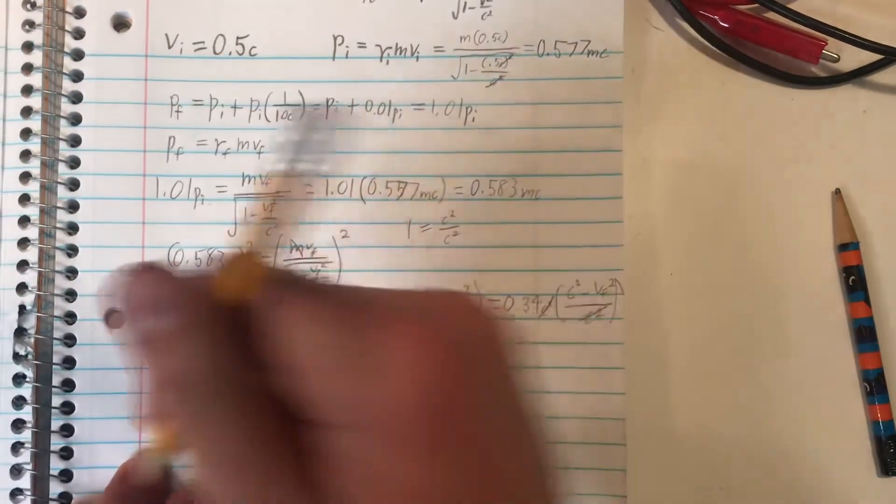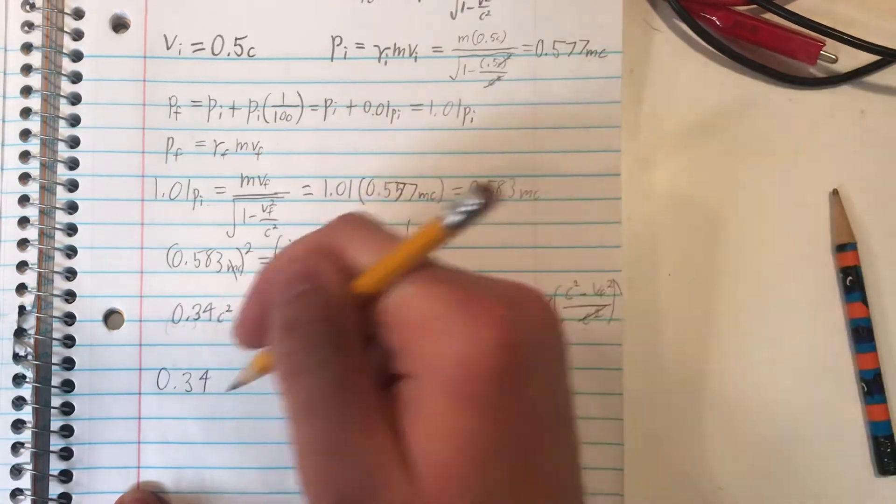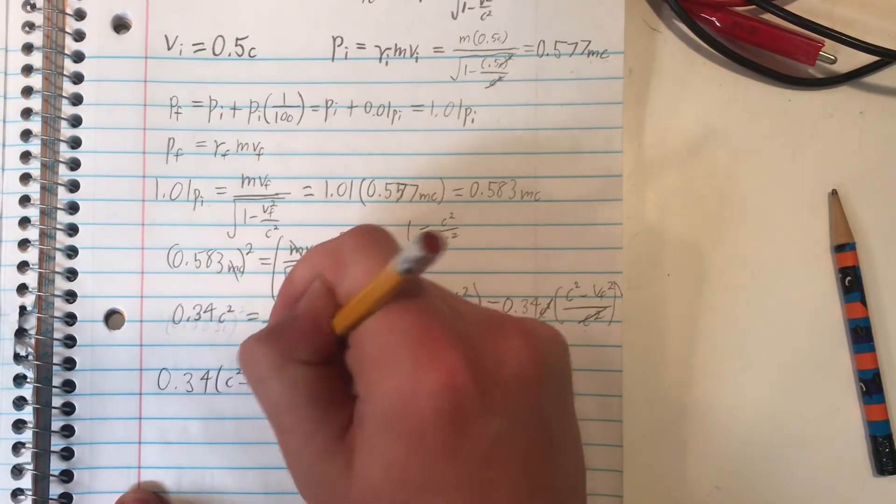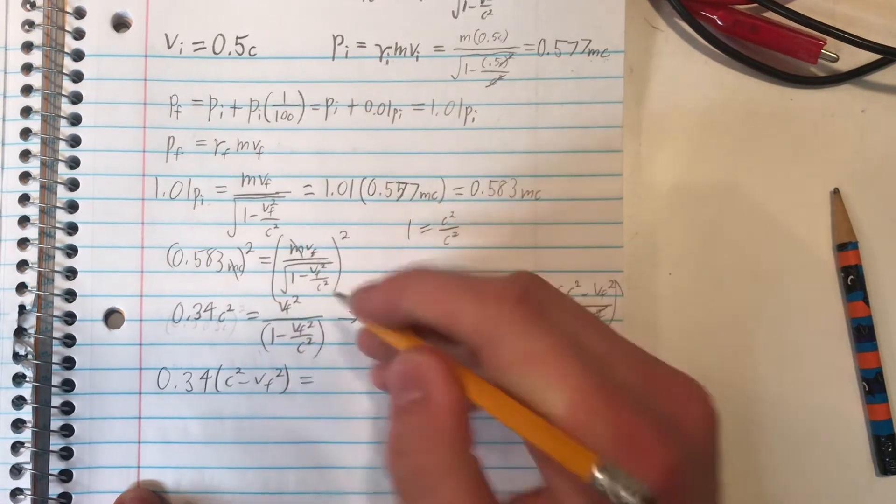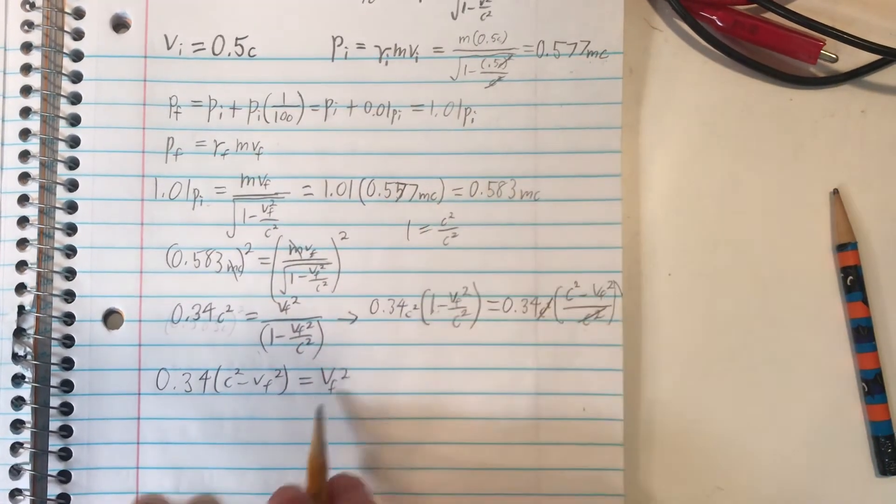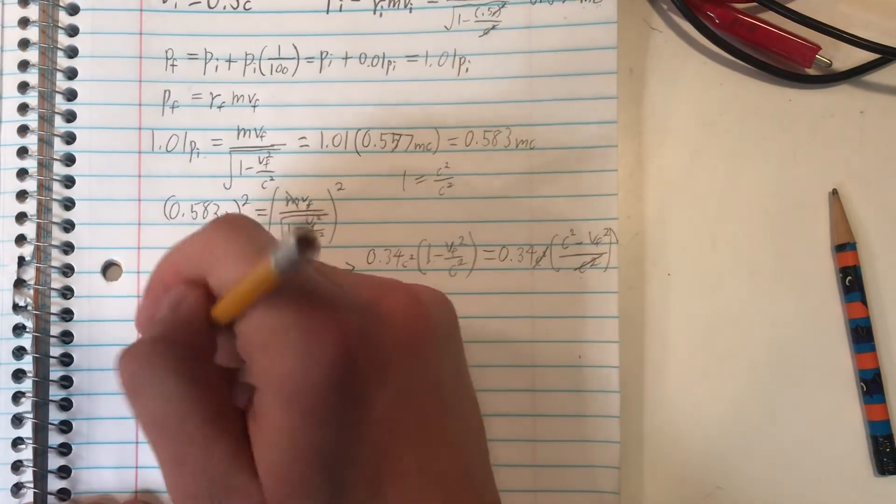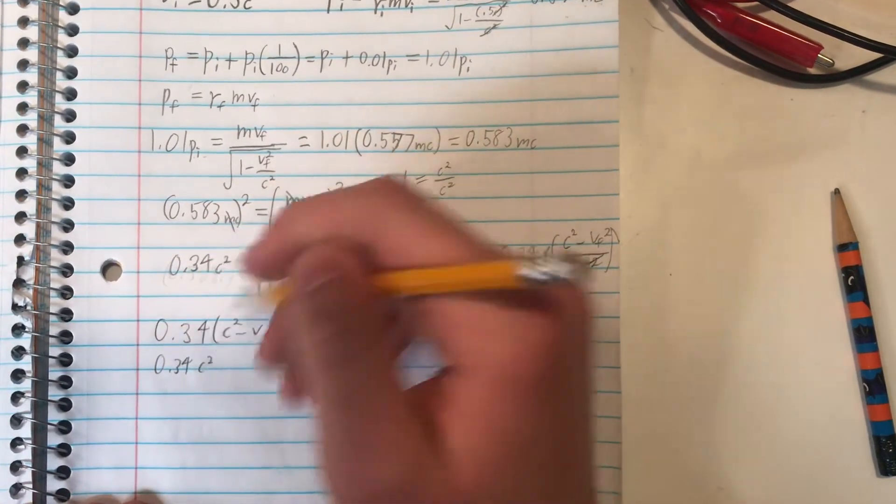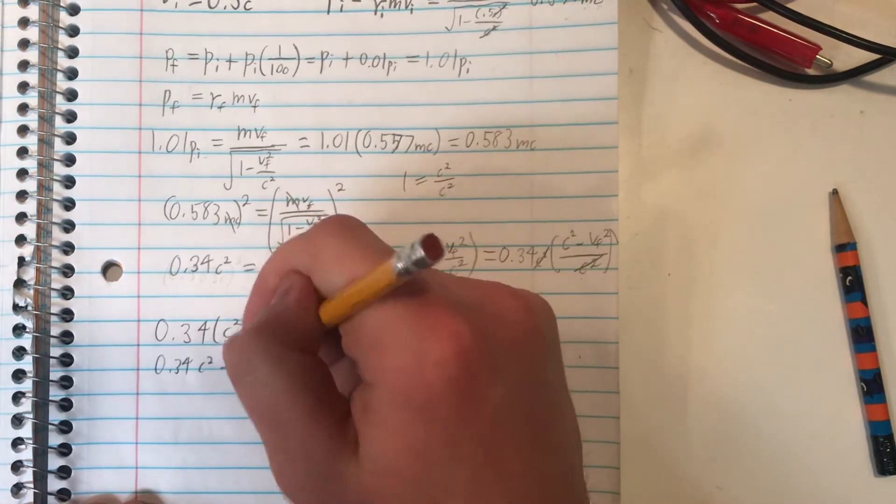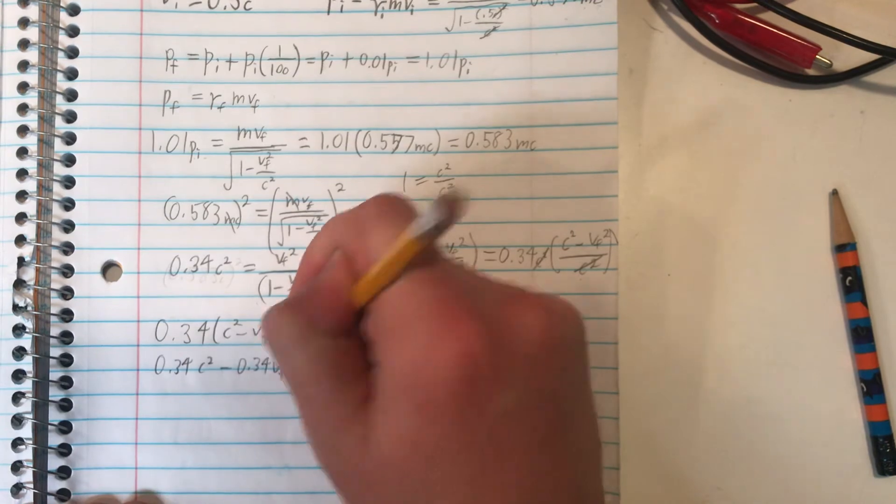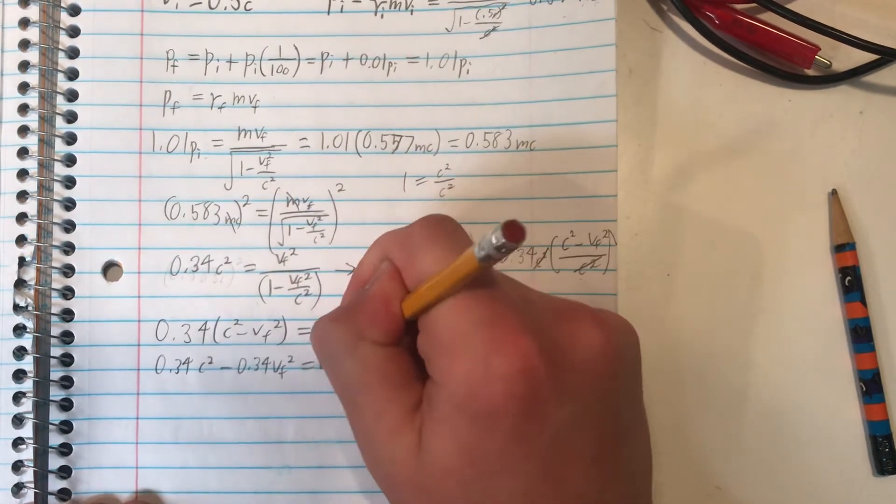So now our formula becomes 0.34 times c squared minus vf squared is equal to vf squared, the speed we're trying to find. So let's distribute this across the parentheses. So that's 0.34 c squared minus 0.34 vf squared equals v sub f squared.